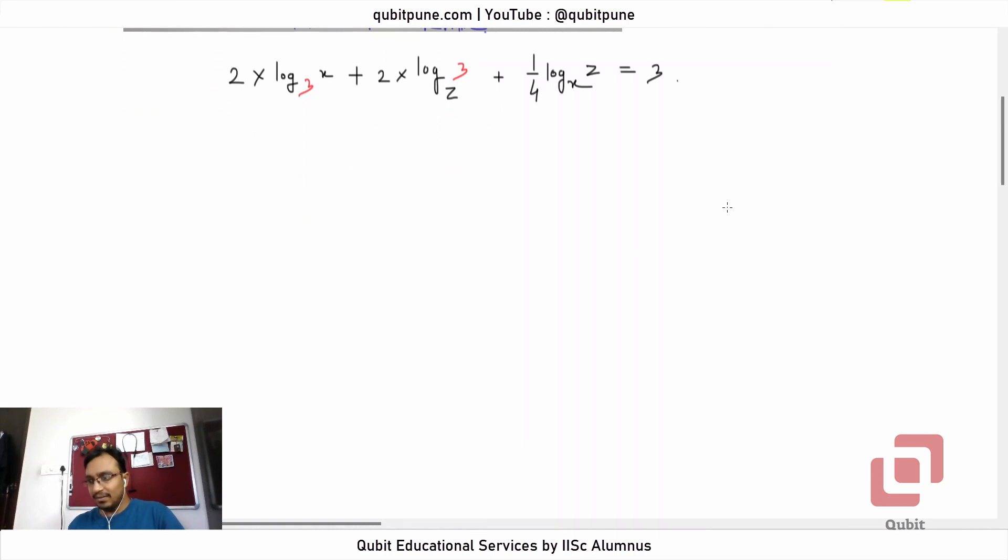By the way, you can see the screen right? Yeah, okay. So one equation is there and there are two unknowns here, and those two unknowns are x and z.